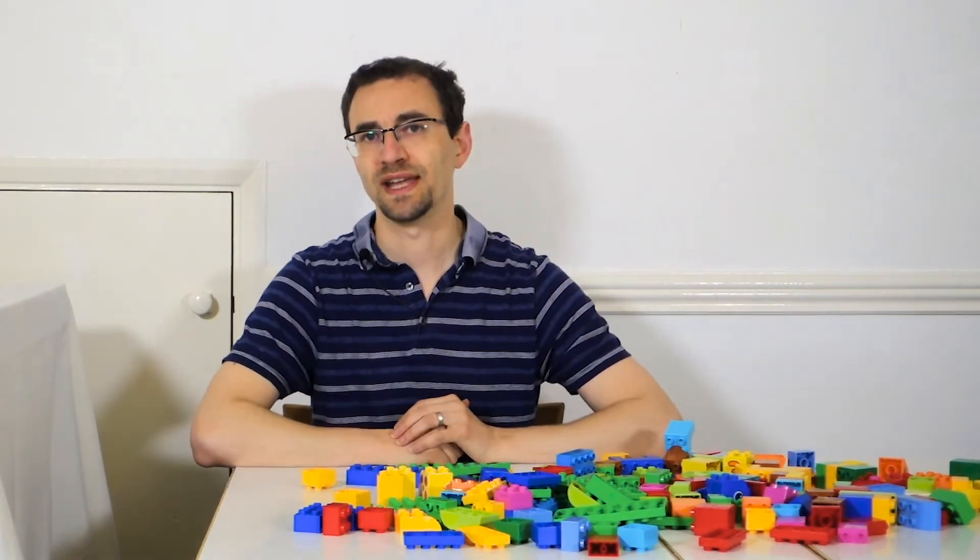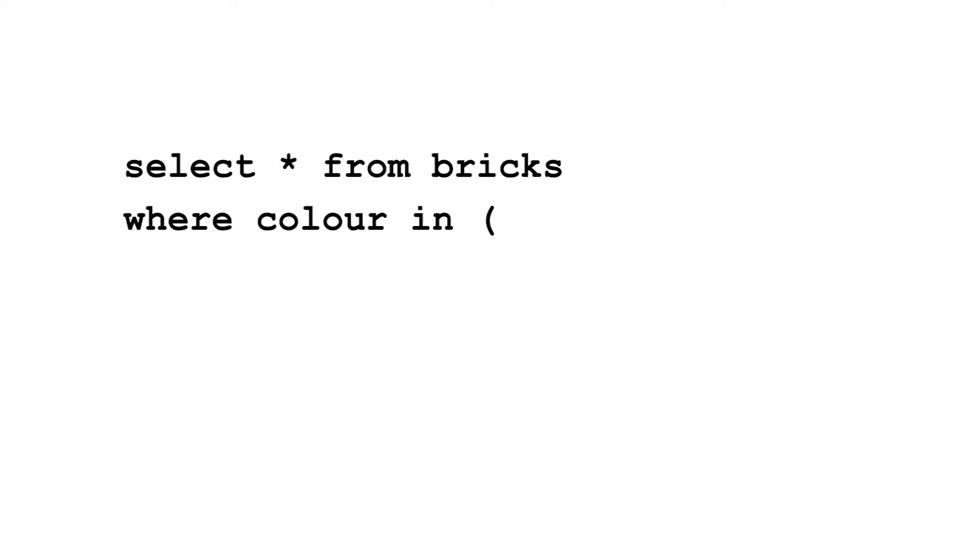Now you can use IN and manually write out these values. But it's easy to make a mistake when doing this. Particularly if you want to include all the different shades of these colours.